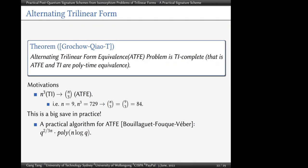The motivation from cryptography: when implementing this scheme, if we generate a tensor it costs n^3 storage, but for an alternating trilinear form we only need n choose 3 entries. For example, if n = 9, then n^3 = 729 but n choose 3 is only 84 — a significant saving in practice. There is also a practical algorithm for ATFE running in time q^{2/3} · poly(n, log q).